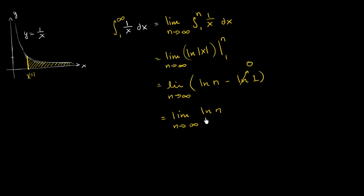Now this is interesting. The natural log function just keeps getting larger and larger. The natural log function looks something like this, keeps growing and growing, albeit at a slower and slower pace, but it keeps growing. The limit as n approaches infinity of the natural log of n is just equal to infinity.